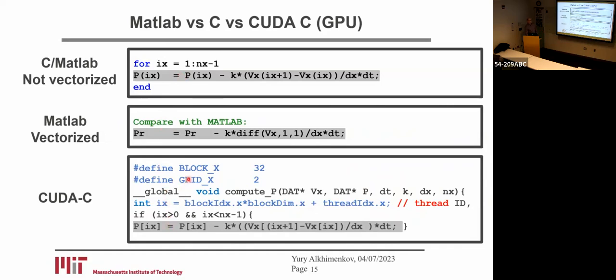The only difference is that on C or MATLAB, we sequentially update pressure at all spatial locations. But on a GPU, we can replace this for loop by something else.